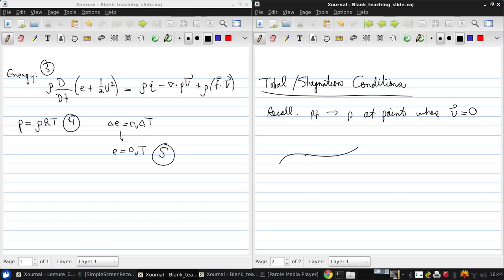So if we consider we have a streamline and we've got some fluid element in here, it's got density rho, temperature T, pressure P, Mach number M, and velocity V. These are static quantities. What does that mean? It means that this is what you would measure if you were riding along with that velocity V.